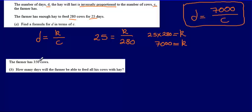For part B, we're told that the farmer has 350 cows, and we're asked how many days will the farmer be able to feed all his cows with hay. So all that we're needing to do here is substitute the number 350 into our formula. We're told that the number of days is equal to 7,000 divided by C, which is 350. So D equals 7,000 divided by 350.